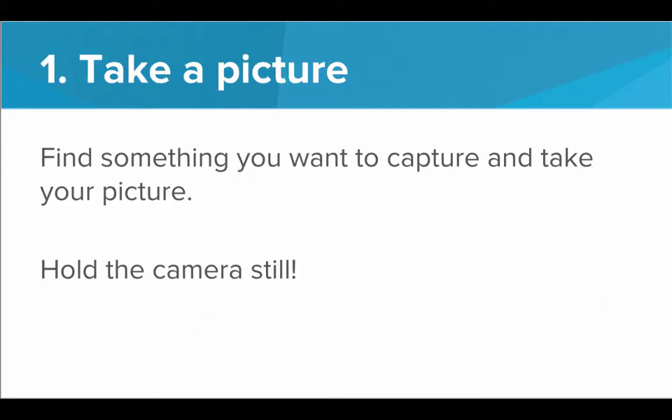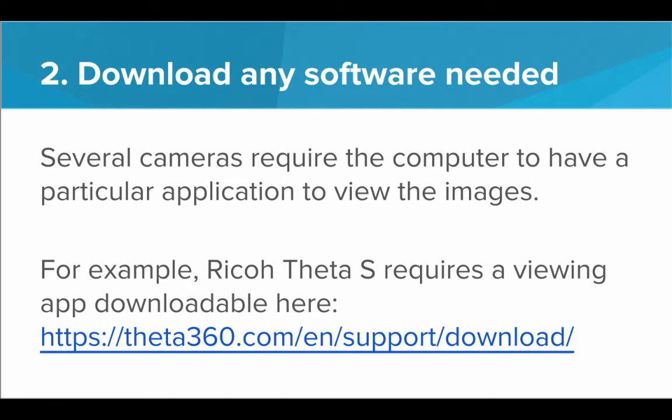The first step is to take a picture. Find something you want to capture and take your picture with your 360 degree camera. Make sure to hold the camera still, because a lot of cameras take a second or two to capture the full field of view — you don't want the camera to shake at all. Second, download any software you need, since several cameras require the computer to have a particular application to view the images. Just Google this and download whatever you need.